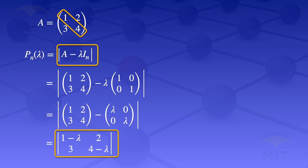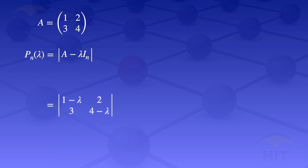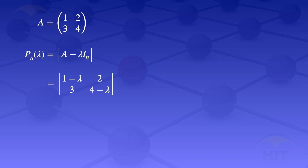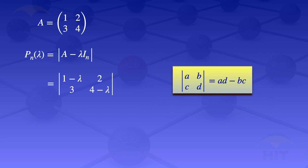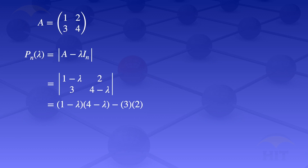Subtracting lambda from the diagonal elements gives us the determinant of one minus lambda, two, three, four minus lambda. We know the determinant of a two by two matrix a, b, c, d equals a·d minus b·c, so our determinant simplifies to one minus lambda multiplied by four minus lambda, minus three times two. Expanding gives us lambda squared minus five lambda minus two.